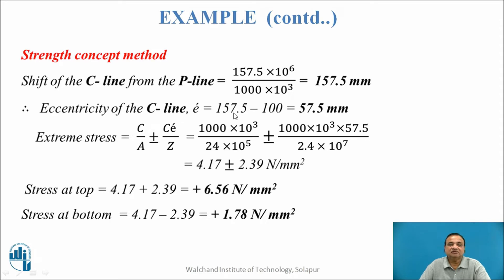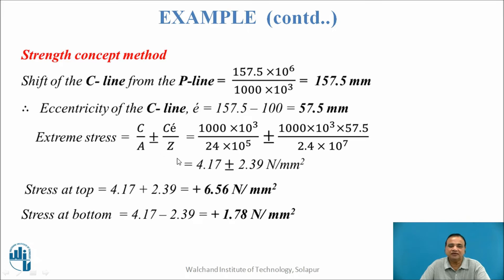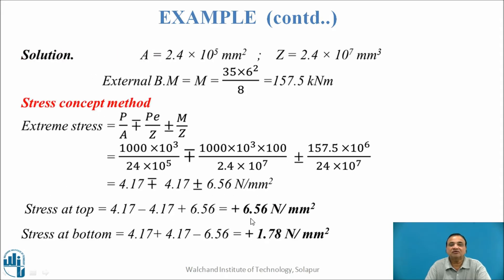The eccentricity of the C line is calculated as: 157.5 (the shift) minus 100 mm (the P line eccentricity), giving 57.5 mm. The extreme stresses due to strength concept are C by A ± C into E' divided by Z, where P must equal C for equilibrium. This gives stress at top as 6.56 N/mm² and stress at bottom as 1.78 N/mm², which is the same as the stress concept result.